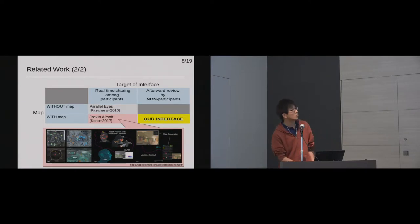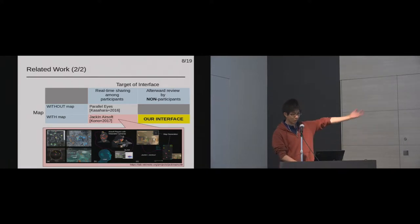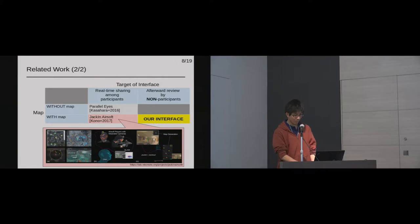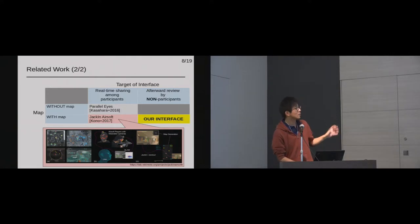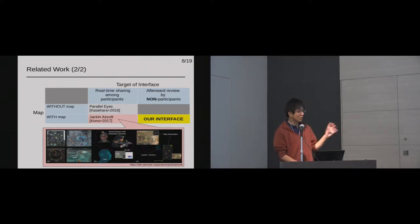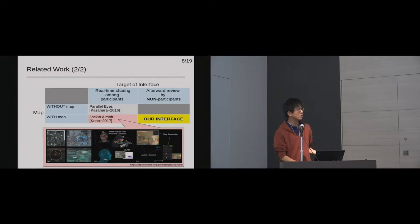In the second example, Jacklin Airsoft, game players can switch between their own view, other players' views, and a gaming map. However, this interface is not designed to review the group activity afterwards by non-participants of the game. So it is still difficult to track spatial and temporal locations and collaborations of multiple workers.